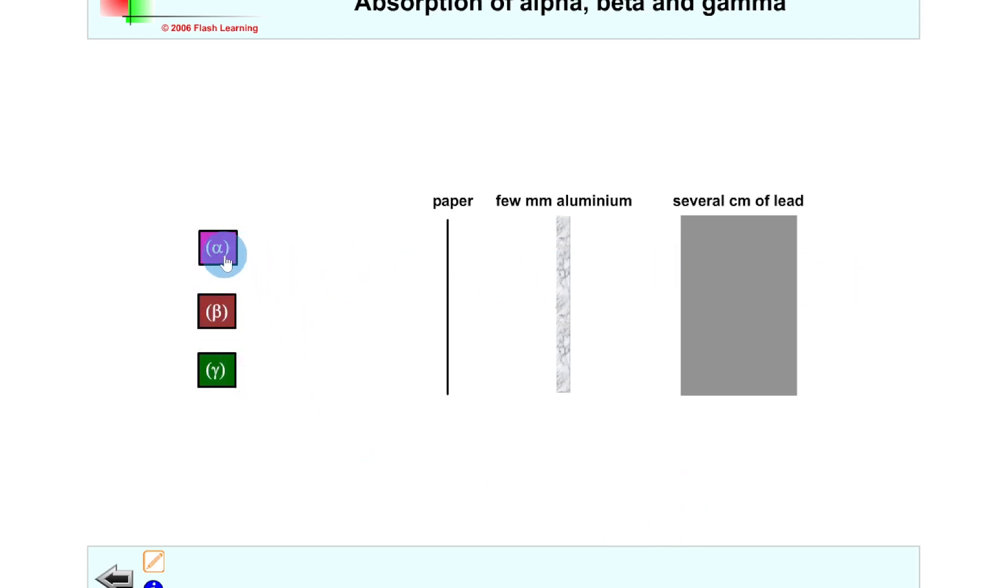So for our alpha particles, first of all, have a look at those, our two protons, two neutrons, or helium nuclei, being absorbed by the paper there.